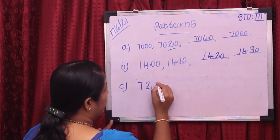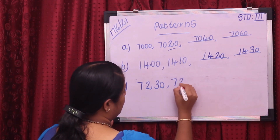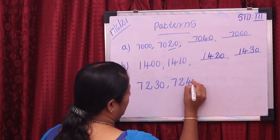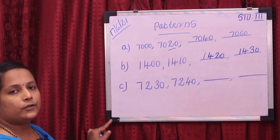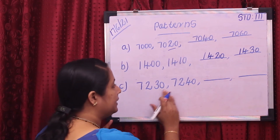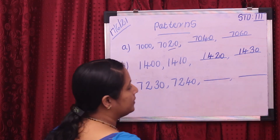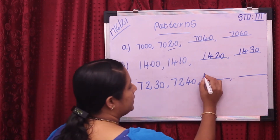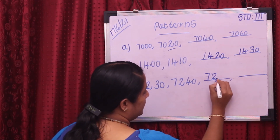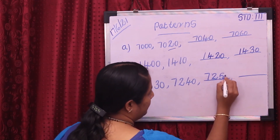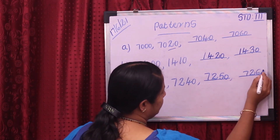Next pattern: 7,230, next is 7,240. Fill up these patterns. So 7,230, the next number is 7,250, then the next number is 7,260.